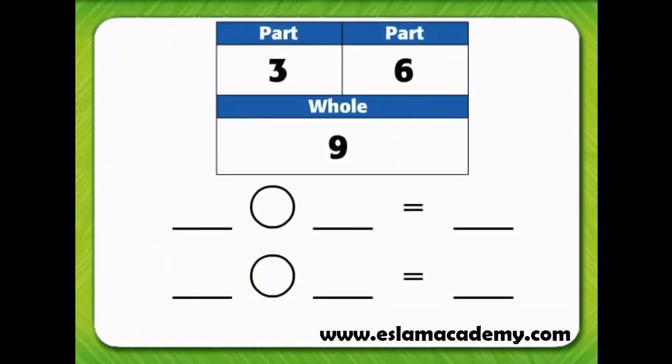Look at the completed work mat to identify the addition fact. Add the two parts to find the whole. The two parts are 3 and 6. The whole is 9, so the addition fact is 3 plus 6 equals 9. Now write the addition fact: 3 plus 6 equals 9.